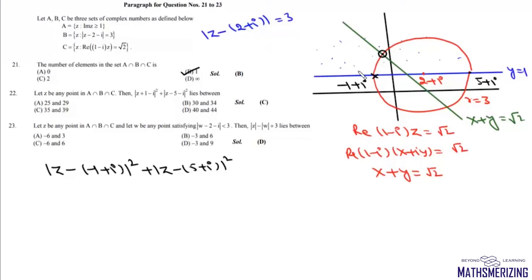So this is some point say P and this is Q and let the center be R and let this point be T. So what we are asked is z minus minus 1 plus iota whole square. So that means we need to find the value of PT square plus TQ square.